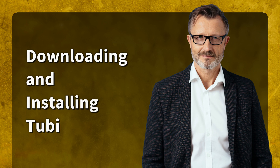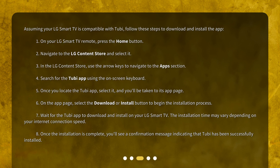Downloading and installing Tubi. Assuming your LG Smart TV is compatible with Tubi, follow these steps to download and install the app. 1. On your LG Smart TV remote, press the Home button. 2. Navigate to the LG Content Store and select it. 3. In the LG Content Store, use the arrow keys to navigate to the App section.